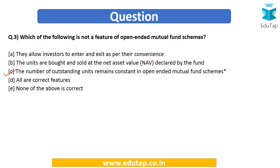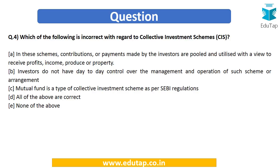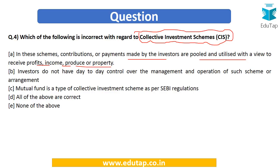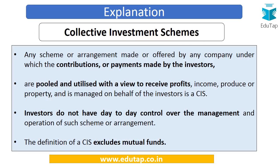The fourth question asks: which of the following is incorrect with regard to collective investment schemes (CIS)? The options include: (A) contributions made by investors are pooled and utilized to receive profits, income, produce, or property; (B) investors do not have day-to-day control over the management and operation of such schemes; (C) mutual fund is a type of collective investment scheme as per SEBI regulations; (D) all of the above are correct; or (E) none of the above.